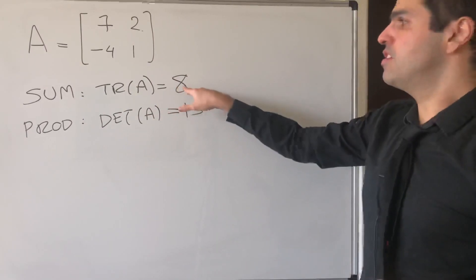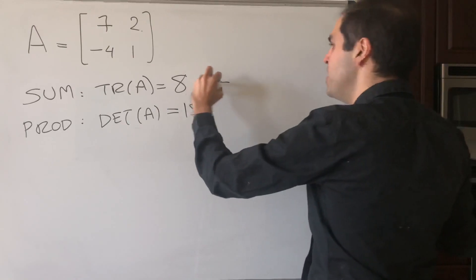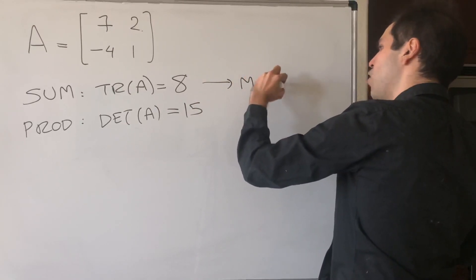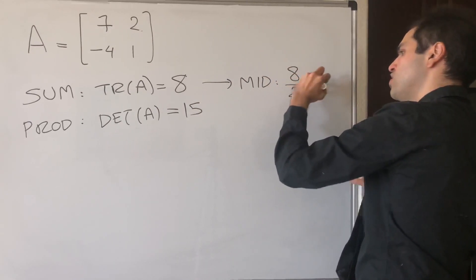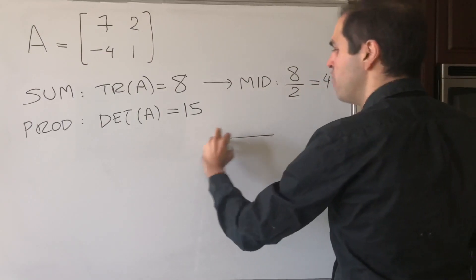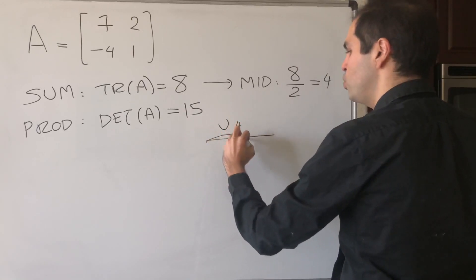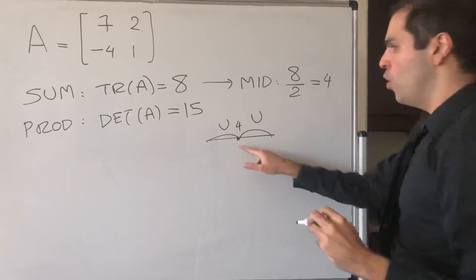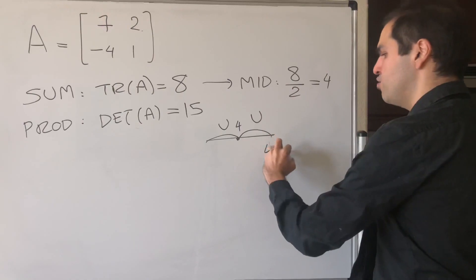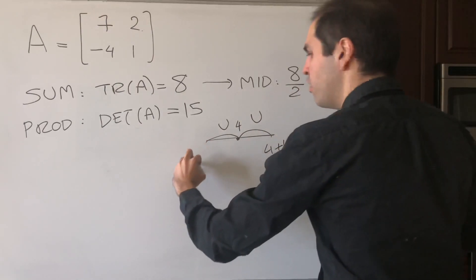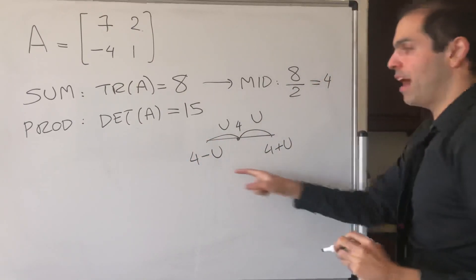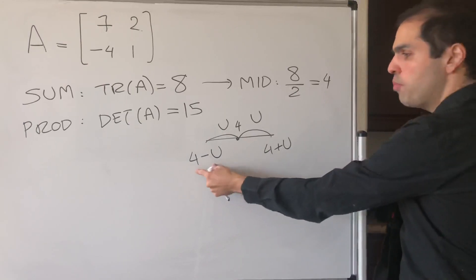Now, if the sum is 8, it means that the midpoint is 8 over 2, which is 4. So if we have our two eigenvalues, and this is 4, and this is the distance u, then one eigenvalue is 4 plus u, and the other eigenvalue is 4 minus u.